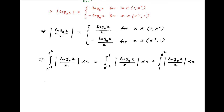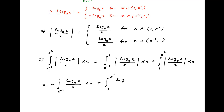In the first case, modulus of ln x upon x is equal to minus ln x upon x, and therefore the first term is the integral from e raised to the power minus 1 to 1 of minus ln x upon x dx, while the second term is the integral from 1 to e square of plus ln x upon x dx.